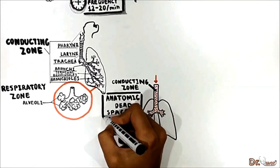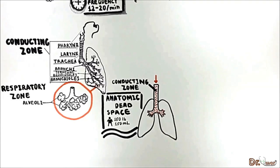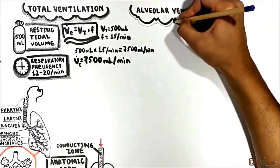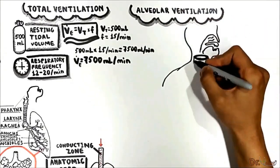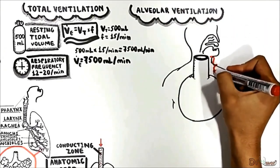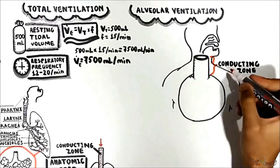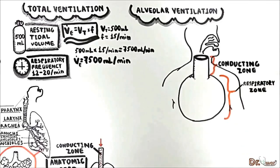Significant gas exchange with the blood occurs only in the alveoli. This brings us to alveolar ventilation. Consider the lung as a simple balloon model: one part represents the conducting zone — the anatomical dead space — and the other part represents the respiratory zone, the alveoli.